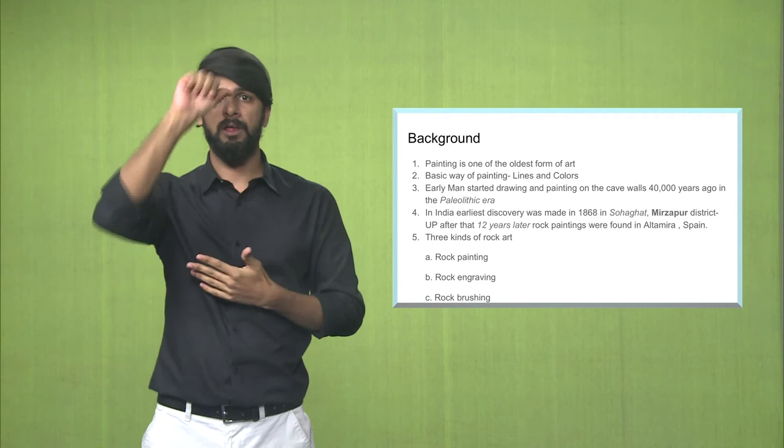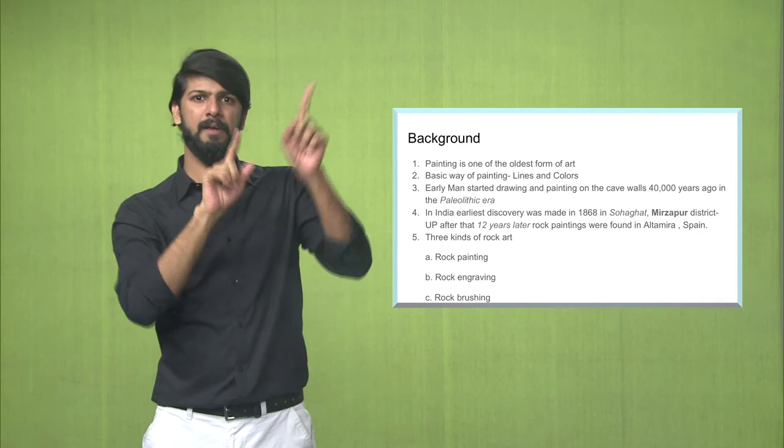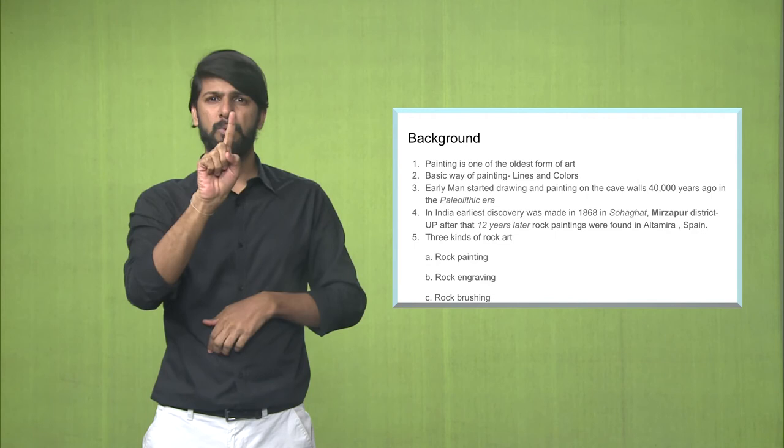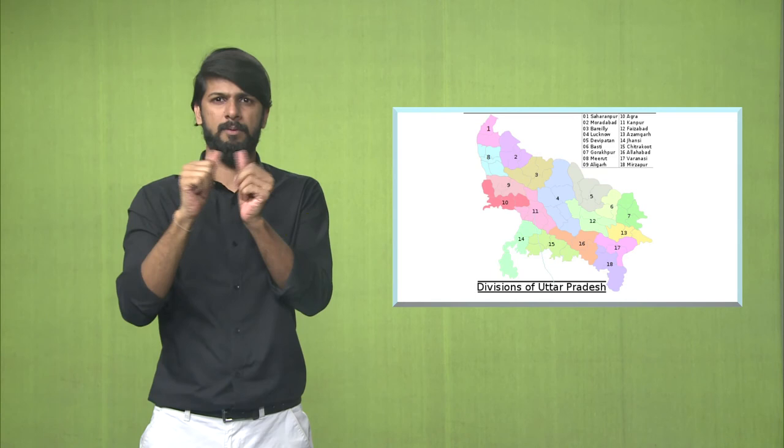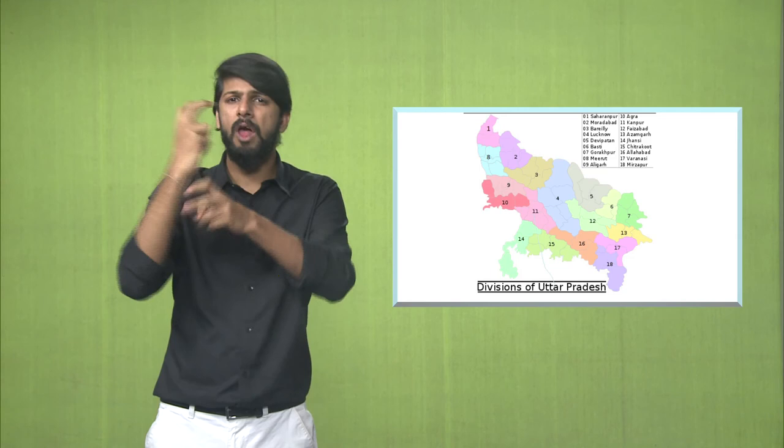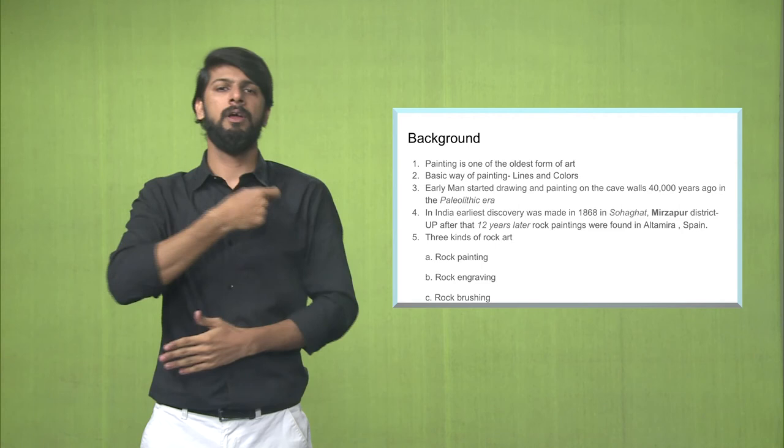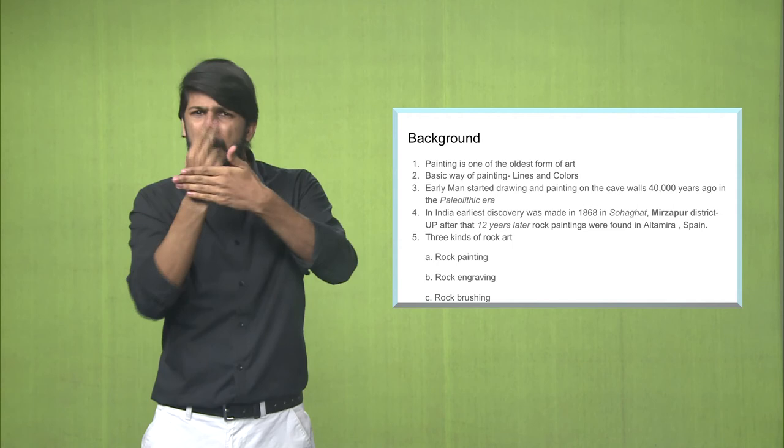In India, the earliest discovery was made much before it was found in Spain. The rock paintings were found in India first and 12 years later they were found in the place in Spain. This was in the year 1868. In Mirzapur district. Mirzapur is in the state of Uttar Pradesh and there is a place called Soha Ghat. And close to Soha Ghat was these caves which were found where prehistoric men had lot of paintings made inside the caves. And then later, 12 years later, similar paintings were also found in Spain. So in India it was found before Spain.